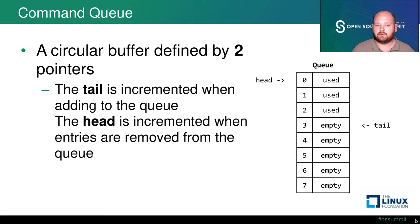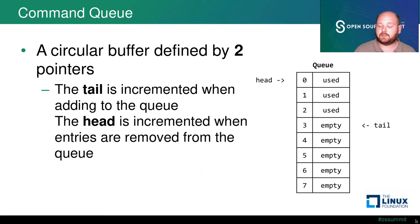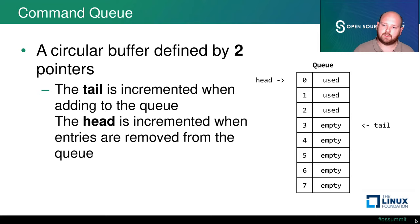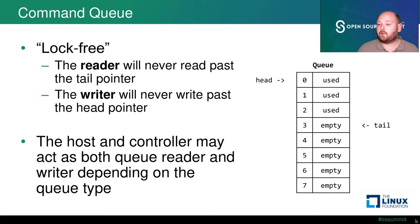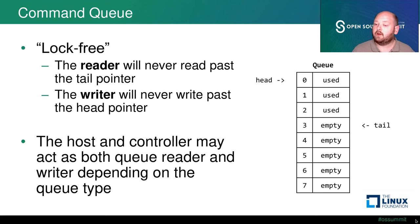The queues central to NVMe are basically circular buffers defined by two pointers: the tail pointer, incremented when we add something to the queue, and the head pointer, incremented when we remove or read entries. In the example, we have a queue with three entries where the reader hasn't read any of them — the head pointer points to the first location and the tail pointer points to the next empty slot. The queues are lock-free because the reader never reads past the tail pointer and the writer never writes past the head pointer. The host and controller can act as both queue readers and writers depending on the queue — in a submission queue, the host is the writer and the controller is the reader, and for completion queues it's the other way around.